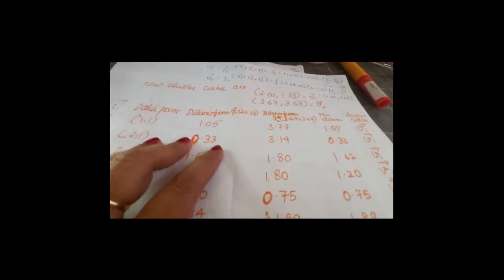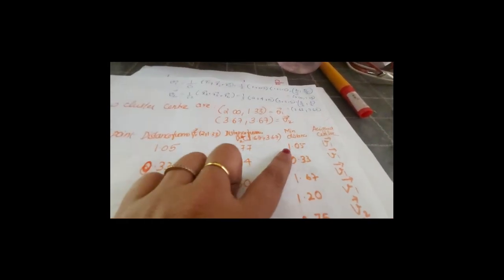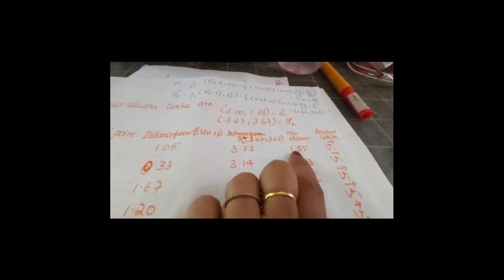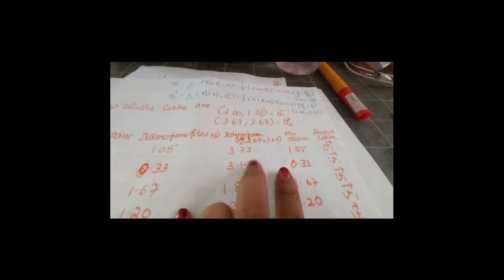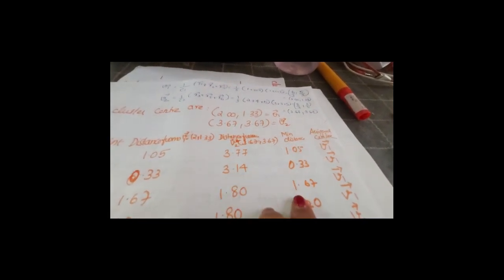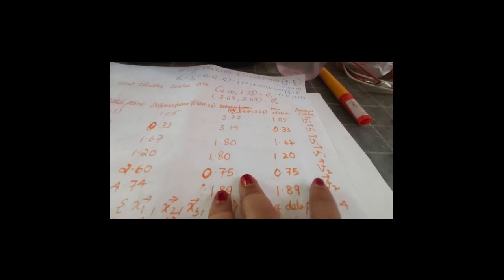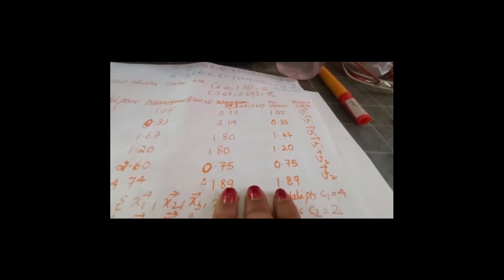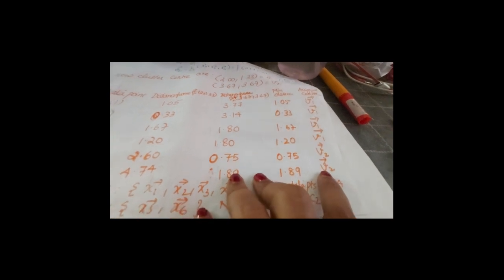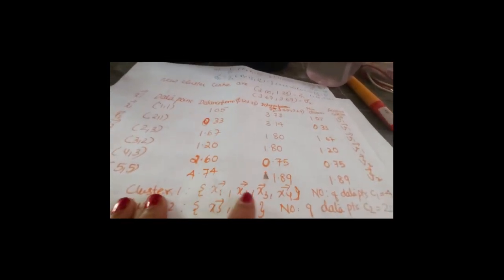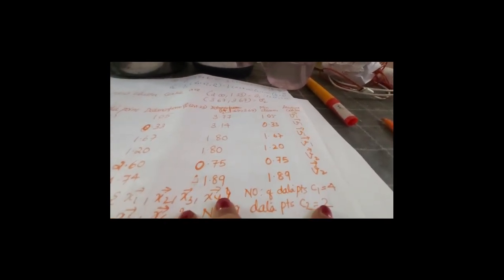Computing minimum distances: x1 minimum is 1.05 from V1, x2 is 0.33 from V1, x3 is 1.67 from V1, x4 is 1.20 from V1, x5 minimum is 0.75 from V2, x6 is 1.89 from V2. So cluster C1 now consists of x1, x2, x3, x4 with 4 data points, and cluster C2 consists of x5 and x6 with 2 data points.